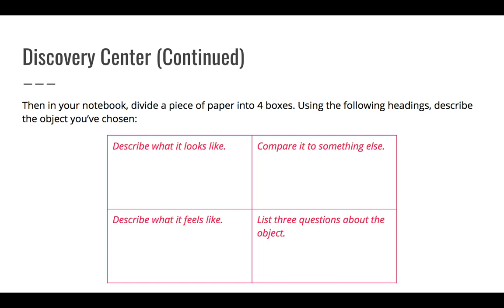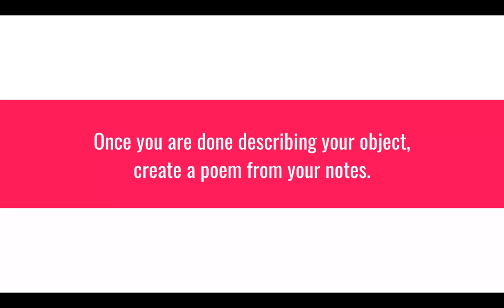In your notebook, divide a piece of paper into four boxes using these headings and describe it: describe what it looks like, compare it to something else, describe what it feels like, and list three questions about the object. When you've finished describing your object, create a poem from your notes.